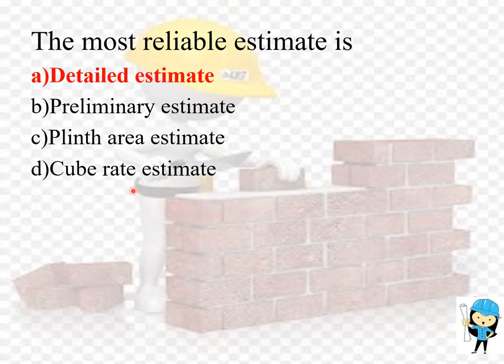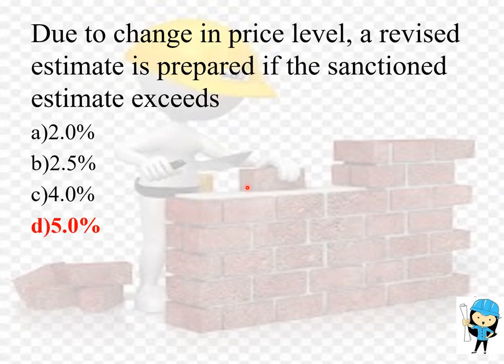Cube rate estimate is a preliminary estimate or approximate estimate and it is prepared by taking the cubical contents of the building, the cube rate being deduced from the cost of buildings having similar specification and construction in the locality. Due to the change in price level, a revised estimate is prepared if the sanctioned estimate exceeds 5 percentage.